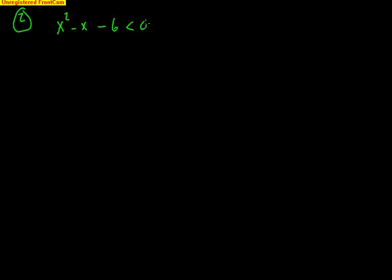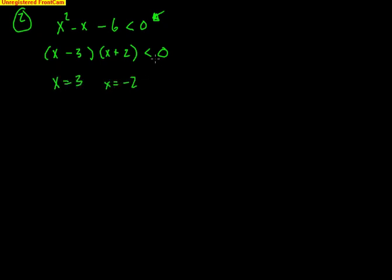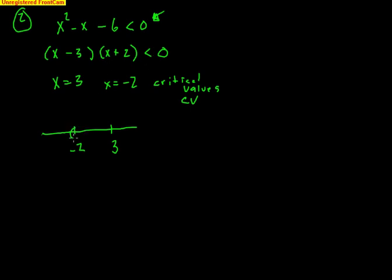Let's check out another problem using the same concepts. x squared minus x minus 6 is less than 0. I have to factor and I need a 0 on the right side — which I already have. So I get (x minus 3)(x plus 2) less than 0. That checks out. So x equals 3 and x equals negative 2, but those are not solutions — this is not an equation. These are our critical values. With those CVs, make a number line with them in order: negative 2 before 3. Since I can't equal 0, use open dots.